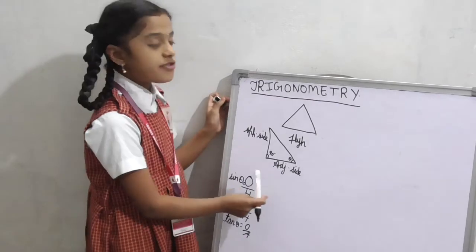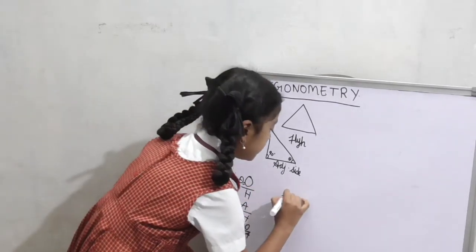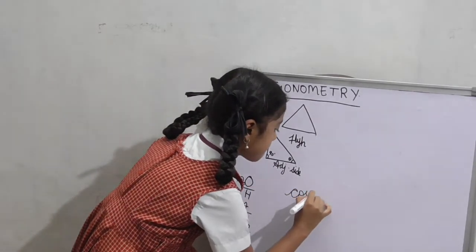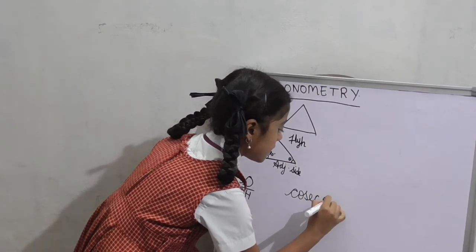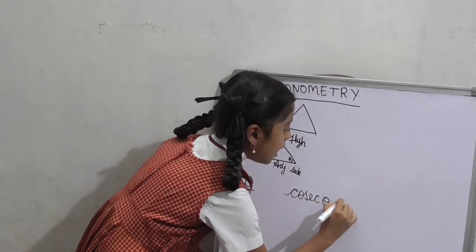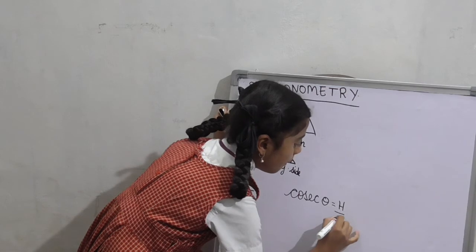Reciprocal. Reciprocal of sin theta is cosec theta. Its formula is hypotenuse by opposite side.